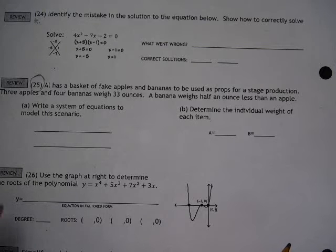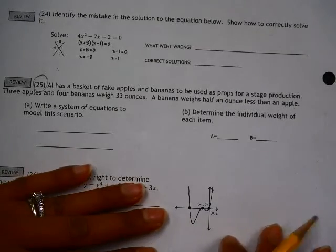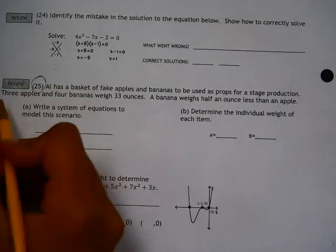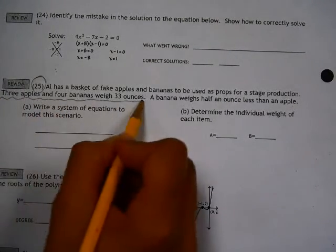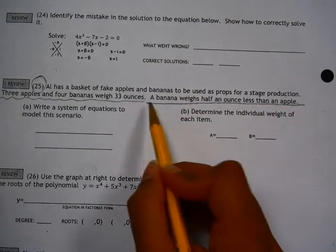This is problem 25A. Al has a basket of fake apples and bananas to be used as props for a stage production. Three apples and four bananas weigh 33 ounces. A banana weighs half an ounce less than an apple.